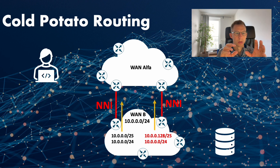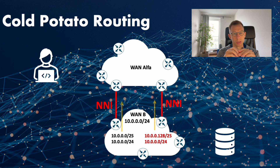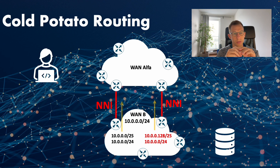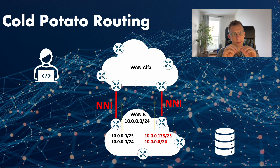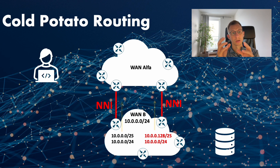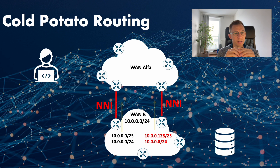To summarize: hot potato routing is used to quickly get data out of the source WAN network, while cold potato routing keeps the data in the source WAN network as long as possible. Each method has its own benefits and is used in different scenarios depending on network requirements. For example, if WAN Alpha is a cloud provider and you don't want to pay for transit bandwidth and prefer to use WAN Beta's backbone, you would select hot potato routing. Another option would be if the bandwidth in WAN Alpha is part of a commercial deal, and utilizing WAN Alpha for transit would allow for bandwidth reduction in WAN Beta's core network — then you could choose cold potato routing.